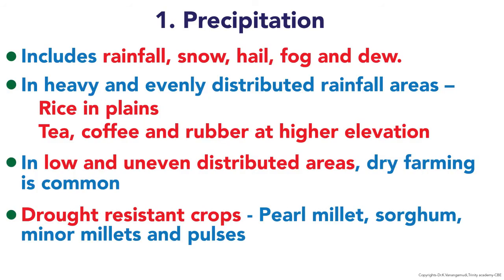Precipitation includes droughts, rainfall, snow, hail, fog, and dew. In heavy and evenly distributed rainfall areas in plains, rice is grown. In higher elevations, tea, coffee, and rubber are cultivated. Dry farming is very common in low and unevenly distributed rainfall areas. Pearl millet, sorghum, minor millet, and pulses are highly drought-resistant varieties.